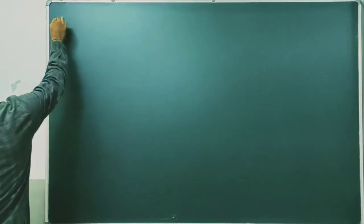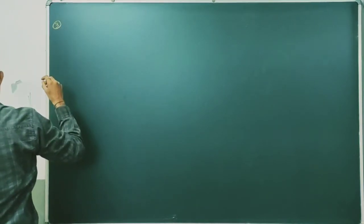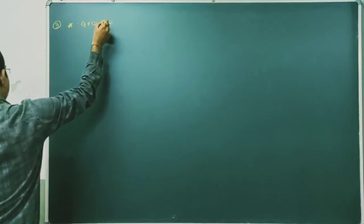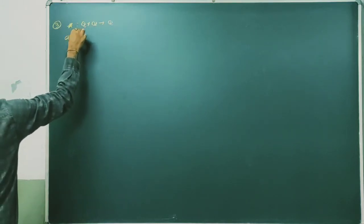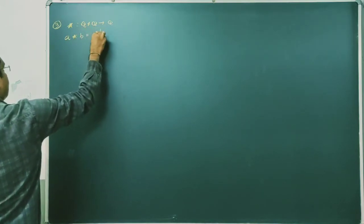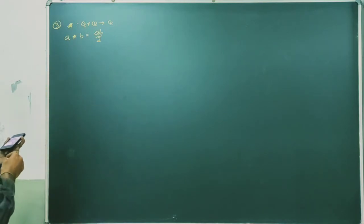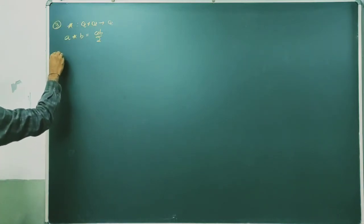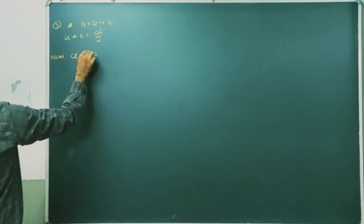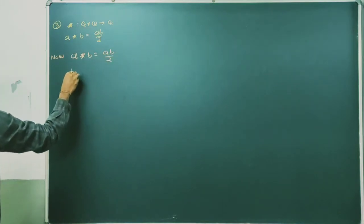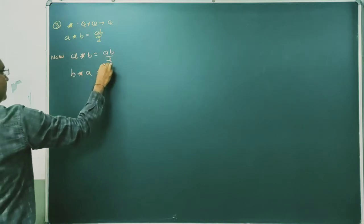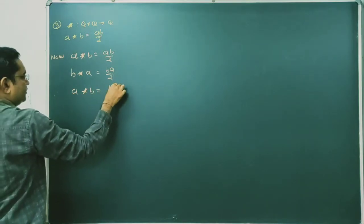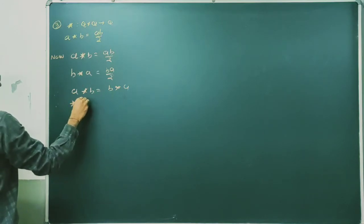Third question: binary operation star on Q is given as Q × Q → Q, defined as a★b = ab/2. We have to check commutativity and associativity. For commutativity: a★b = ab/2. For b★a: multiplication of b and a divided by 2 = ba/2. Both results are equal, so a★b = b★a, hence the binary operation star is commutative.